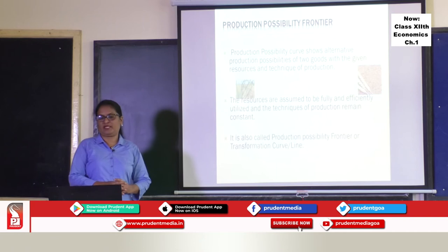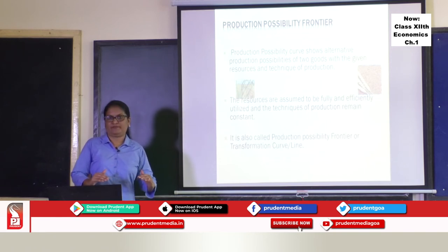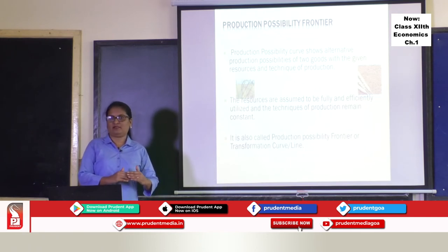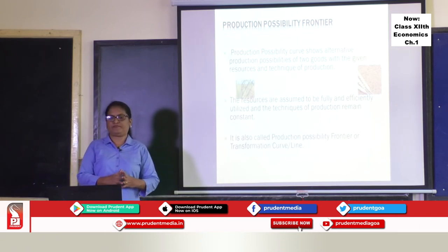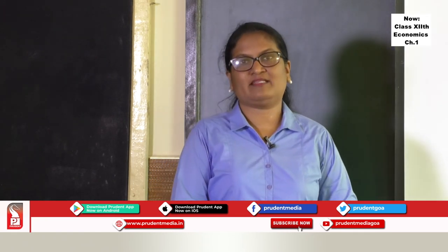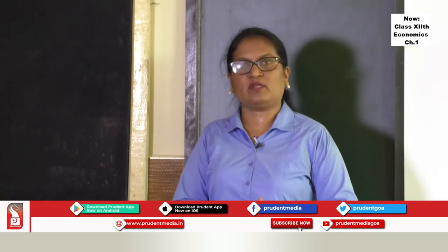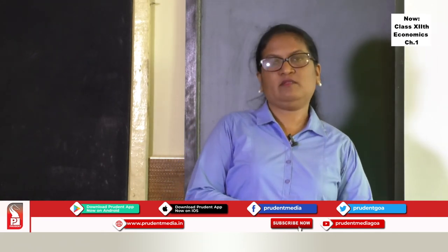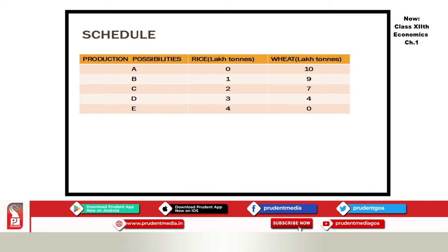The resources are assumed to be fully and efficiently utilized — meaning the resources are not wasted. If the producer has 10 workers, all 10 workers are gainfully employed in the production of rice or wheat or the combination of both goods. The techniques of production remain constant — he will not change the technology in the production process. The production possibility frontier is also known as the transformation curve or production possibility line. We have the schedule — a tabular presentation of the possibilities and the two commodities the producer can produce with his available resources.